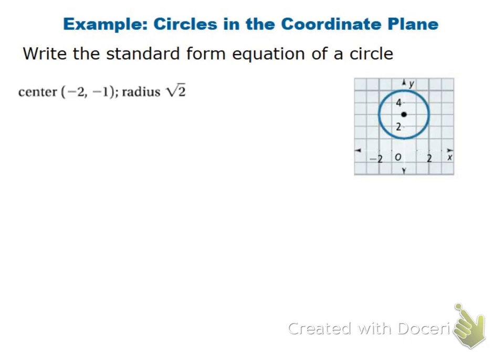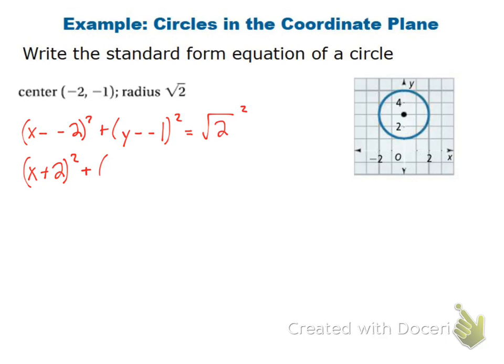Write a standard form equation for these two problems. The first one: we have a center of negative 2, negative 1, and a radius of radical 2. So I'm going to go x minus negative 2 squared plus y minus negative 1 squared is equal to radical 2 squared. To simplify, I get x plus 2 squared plus y plus 1 squared is equal to 2, because the square and square root cancel each other out.